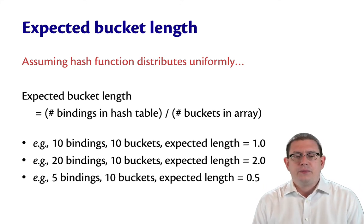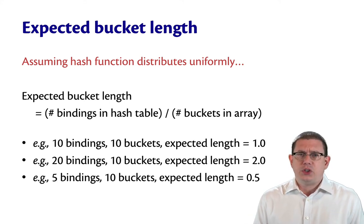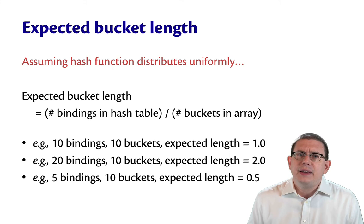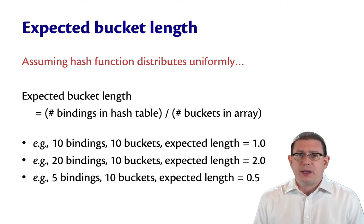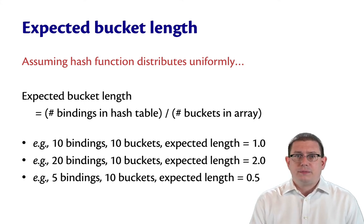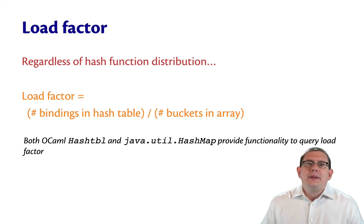If there were 20 bindings in 10 buckets, then the expected length would be two. That's still fine. That's still a constant. Or if the number of bindings was five and there were 10 buckets, then the expected length would be one half. That's even better. Half the time, we won't even have to search any.